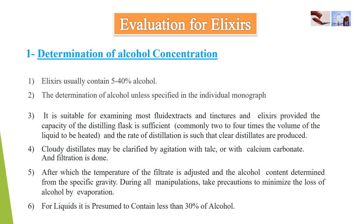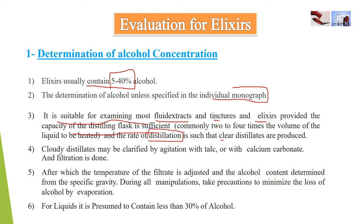Here are the different evaluation parameters of elixirs. The first parameter is determination of alcohol concentration. Alcohol concentration is specified in individual monographs — in elixirs, alcohol content is about 5 to 40%, and examining this is mandatory. Using distillation processes for fluid extracts, tinctures, and elixirs, a clear distillate is produced.